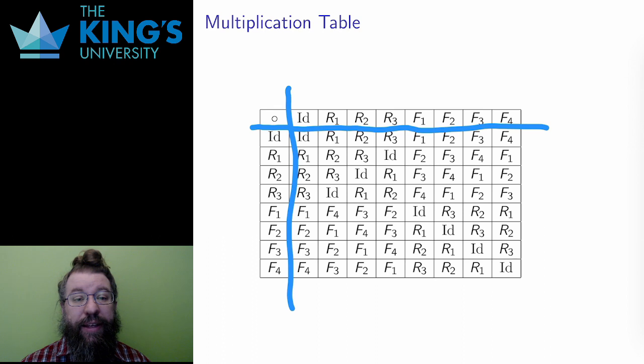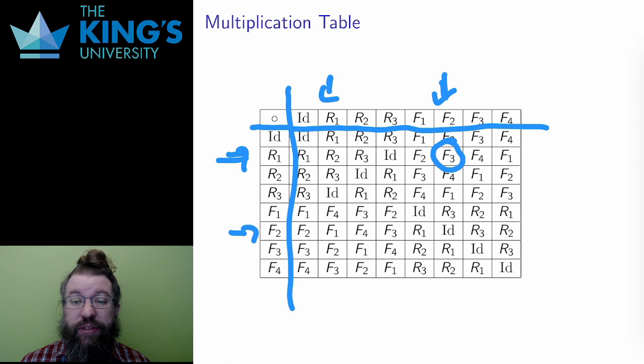I calculated that R1 composed with F2 was F3. Well, here is that square. The composition here is row composed with column, so that the column acts first. I also calculated F2 composed R1, which is F1, and here is that square. And the rest of this table comes from doing all the other transformations and compositions the same way.